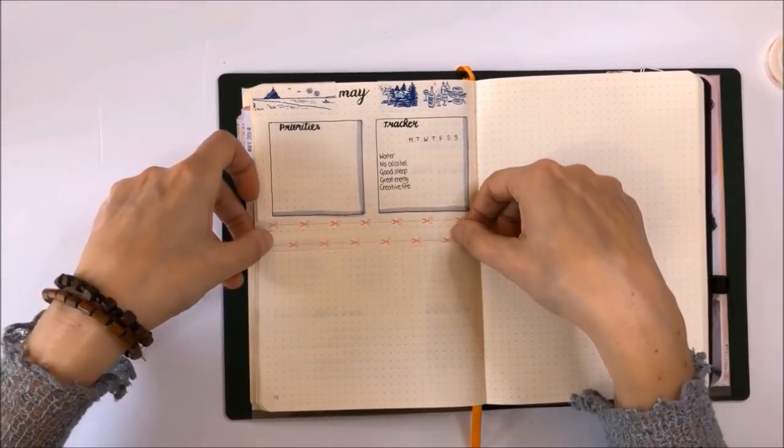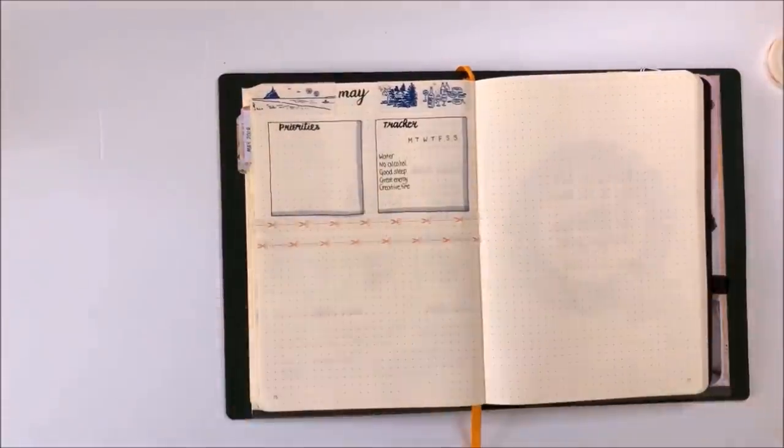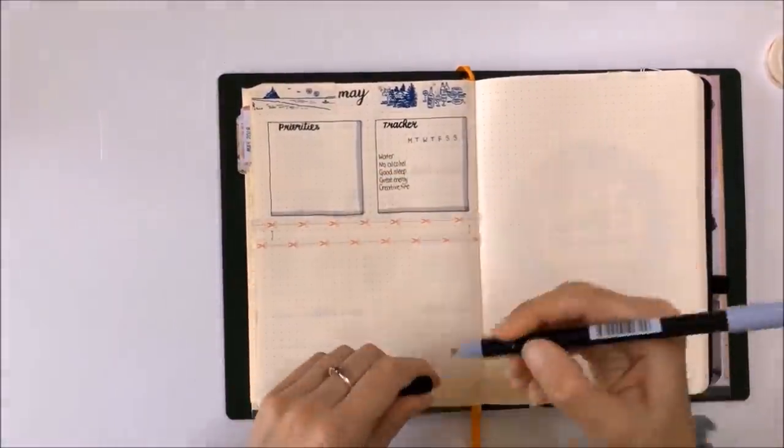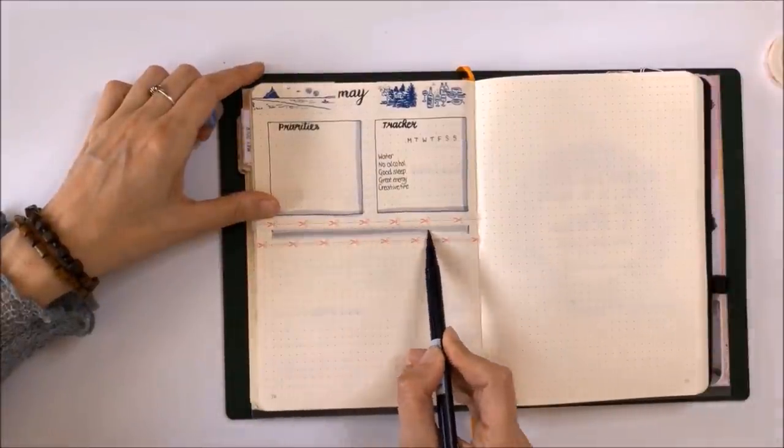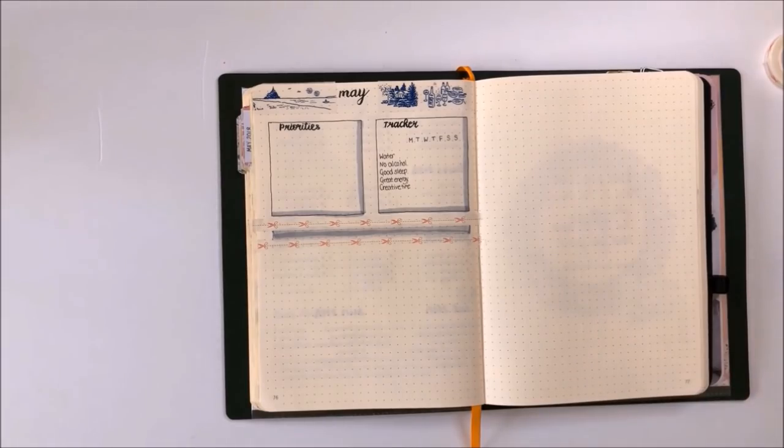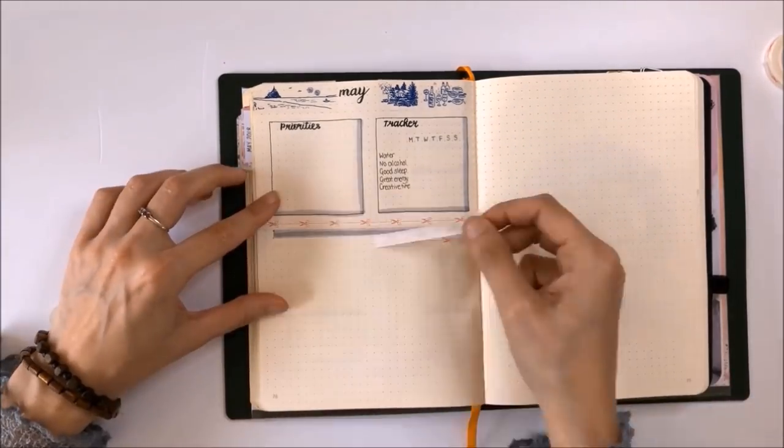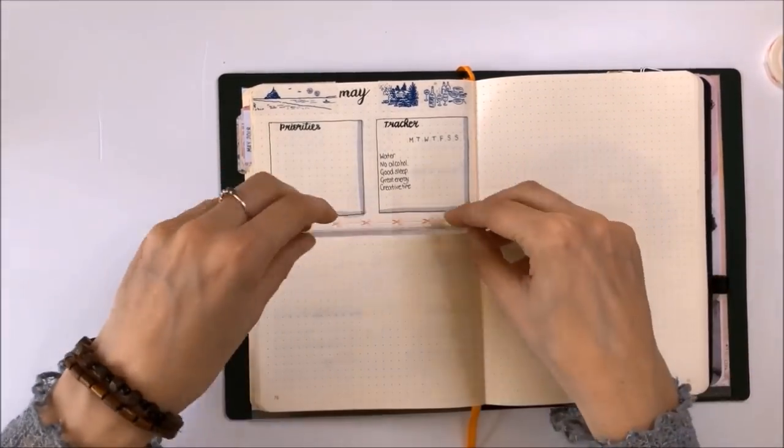The next thing I'm doing is using some really low-tack skinny washi tape, and I will use this to create a border. I can then use the brush pen in between and create lines so that I've got different sections of the page for each day of the week.